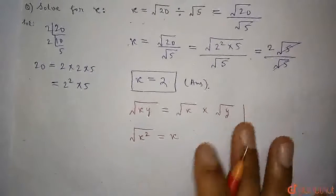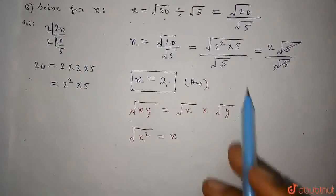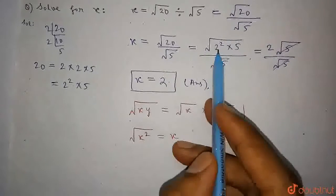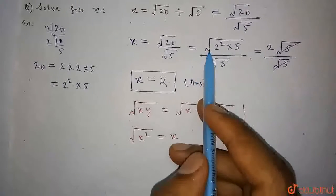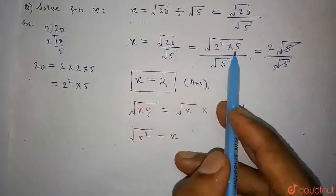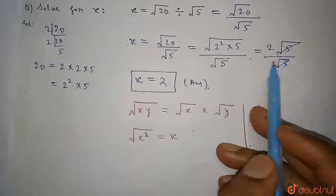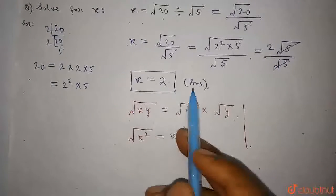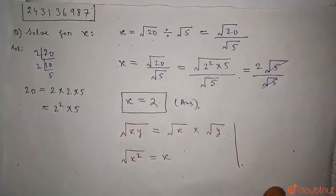So by using those formulas and by solving this, we got √20 as 2² into 5. So 2 came outside the square root and it is left with only 5. So 2√5 whole divided by √5. So √5 cancels out and x equals 2, which is the correct answer we got to this question.